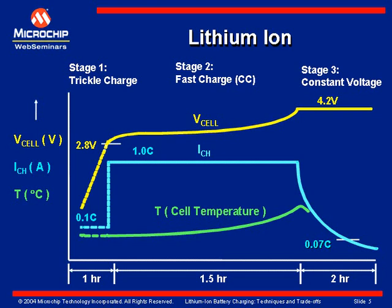After the cell voltage has reached a predetermined value — typically 4.2 volts, though some older lithium-ion cells used 4.1 volts — which generally depends on the type of anode material used in the cell, we go into a constant voltage mode and hold the charging voltage at 4.2 volts. Charge is terminated when the charge current has diminished below about 0.07 percent of the fast charge current, or safety timers may be employed using elapsed time to terminate the charge.